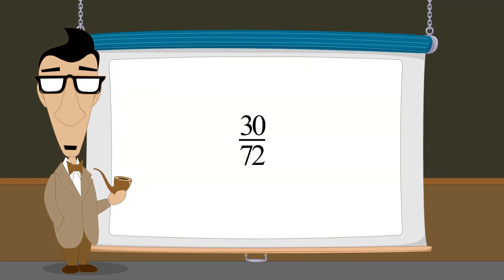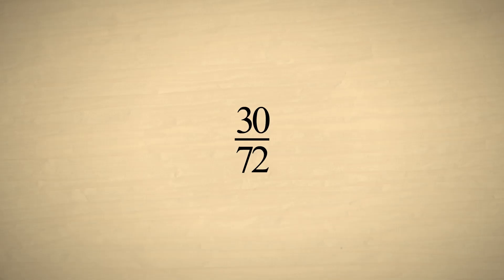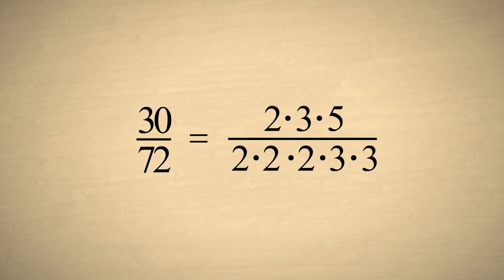Let's do a couple more examples. Let's reduce the fraction thirty-seventy-seconds. We first factor the top and bottom. This time the bottom has three factors of two and two factors of three.